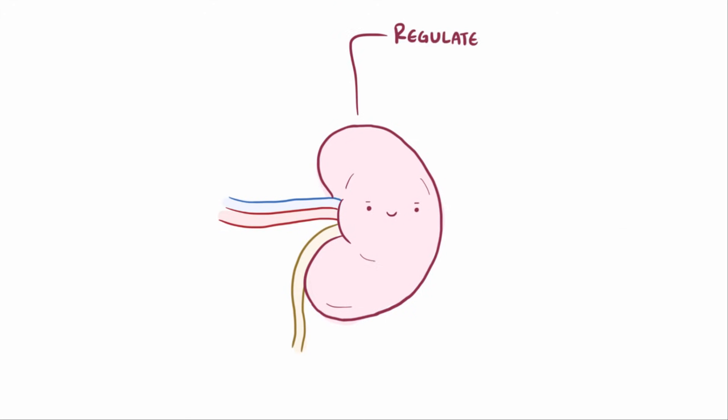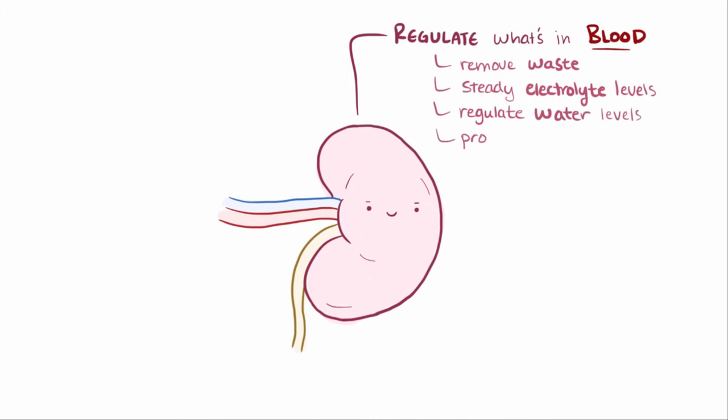Now, the kidneys' job is to regulate what's in the blood, so they might remove waste, or make sure electrolyte levels are steady, or regulate the overall amount of water, and even make hormones. The kidneys do a lot of stuff.